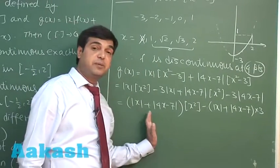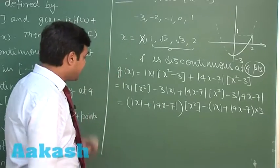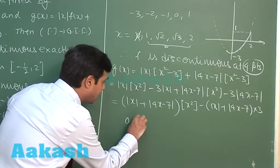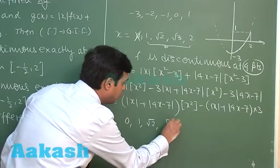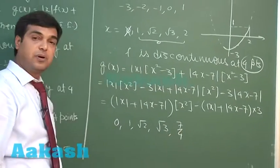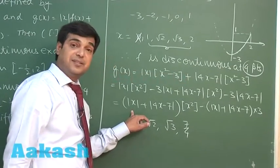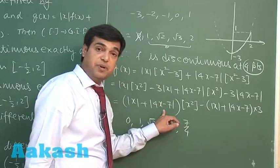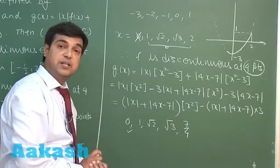We have to talk about the differentiability or non-differentiability of this function. We can see that the important points are 0, 1, root 2, root 3, and in addition 7 by 4. Now, at 0, mod x is clearly non-differentiable. The other one is differentiable. So we find that this function becomes non-differentiable at this point.